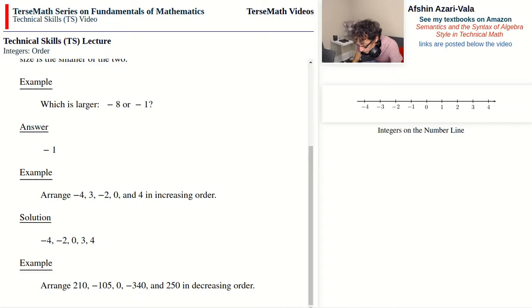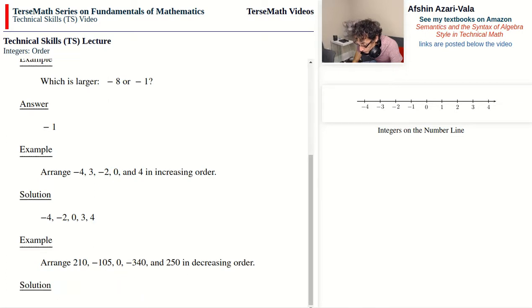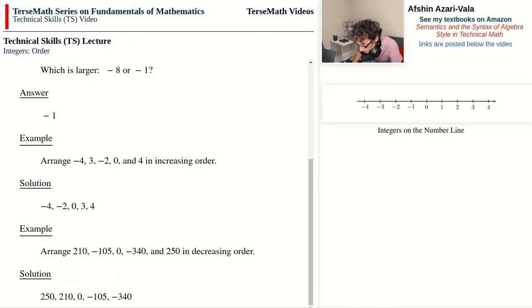210, 0, negative 105, followed by the smallest number in the set, which is negative 340.